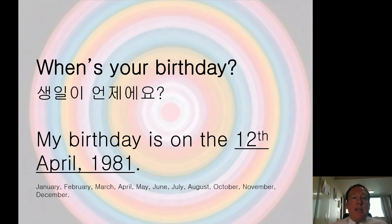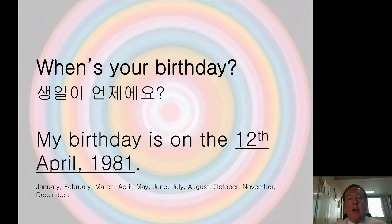If two people are the same age and you still want to know who is oldest, you could ask: 'When is your birthday?' I would usually answer with the day first, then the month, then the year. My birthday is on the 12th — first, second, third, fourth, fifth, sixth, seventh, eighth, ninth, tenth, eleventh, twelfth. My birthday is on the 12th of April.